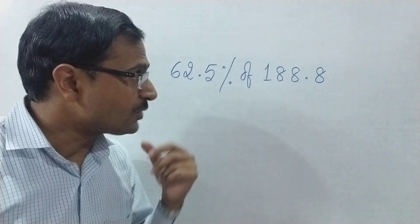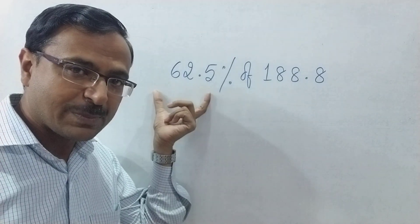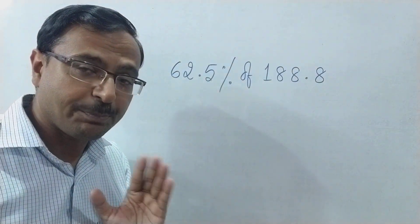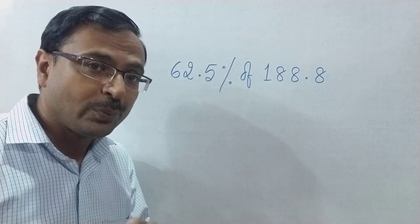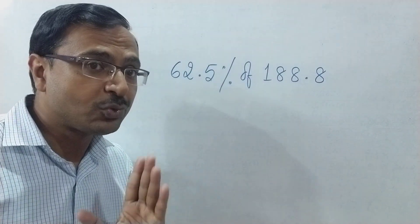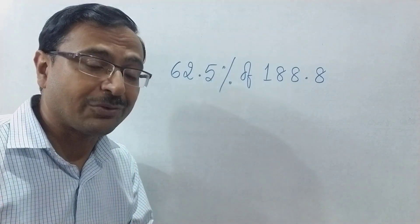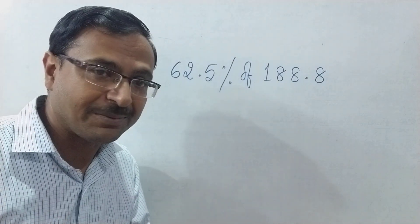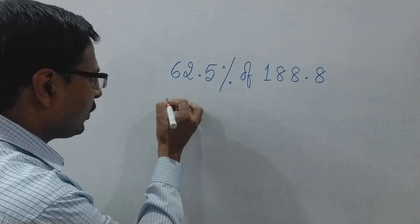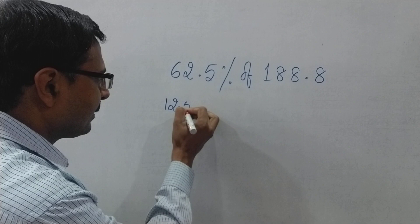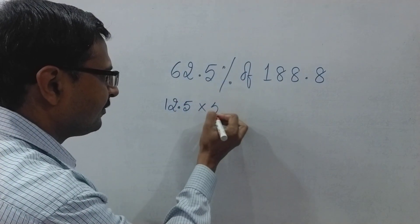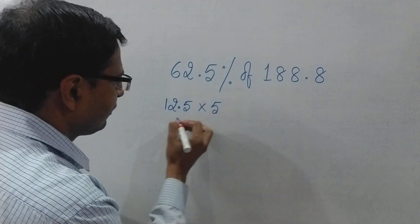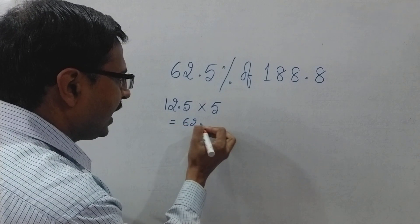So let's see the method. Now at the first glance of this percentage, 62.5 percent, you should know that 62.5 is a multiple of 12.5. Very important observation here: 12.5 multiplied by 5 is 62.5.